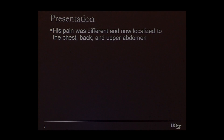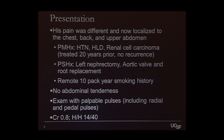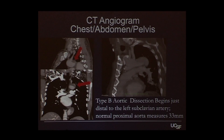On his presentation, his pain felt different from the prior ascending aortic dissection. He had chest, back, and upper abdominal pain. Past medical history was significant for a prior left nephrectomy, the aortic valve and root replacement, some smoking history, but relatively normal labs.